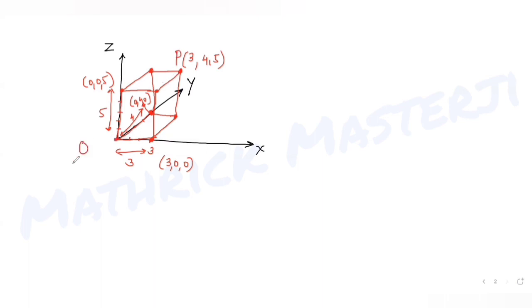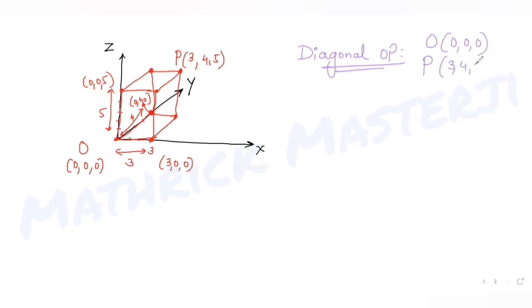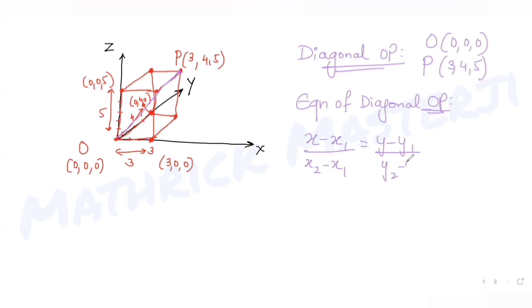The opposite vertex coordinate is basically (3, 4, 5), coming at a distance of 3 from the y-z plane, 4 from the x-z plane, and 5 from the x-y plane. So this is my point P and the origin O is (0, 0, 0). Now let's find the equation of the diagonal OP.